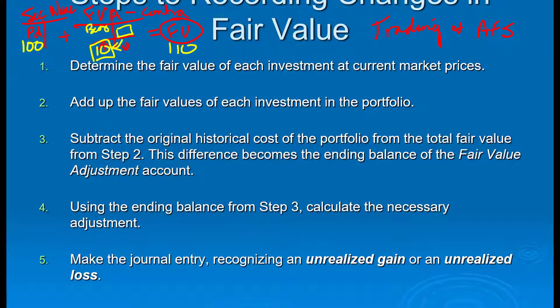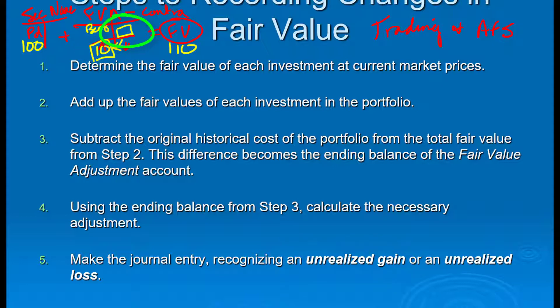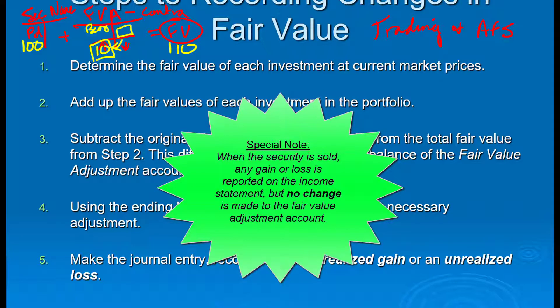For the journal entry: if I need a debit to the fair value adjustment account, I credit an unrealized gain. If I need a credit to the fair value adjustment account, I debit an unrealized loss. One quick note before we move on: when we sell off part of our portfolio, we don't touch the fair value adjustment account. The fair value adjustment account reconciles the value of the portfolio we own with what we paid for it — it has nothing to do with sales. We leave it out of sales transactions and readjust it at the end of the next period.